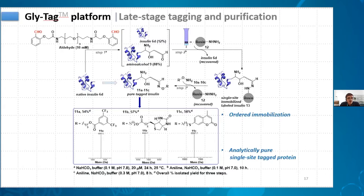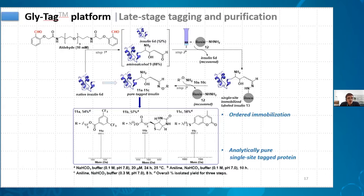In the other case, the resin is used for a very different reason — we do not want to install any probe on the protein; rather, we want to purify a protein from a mixture of proteins. In this scenario you need a completely different set of chemistry because the release chemistry becomes very important. This becomes even more valuable for therapeutic proteins because you would not want metal contaminants.